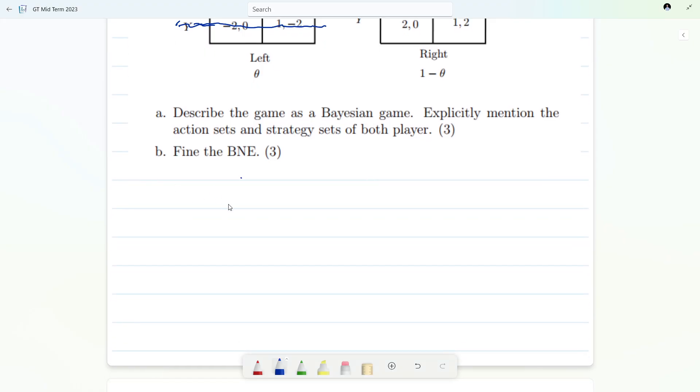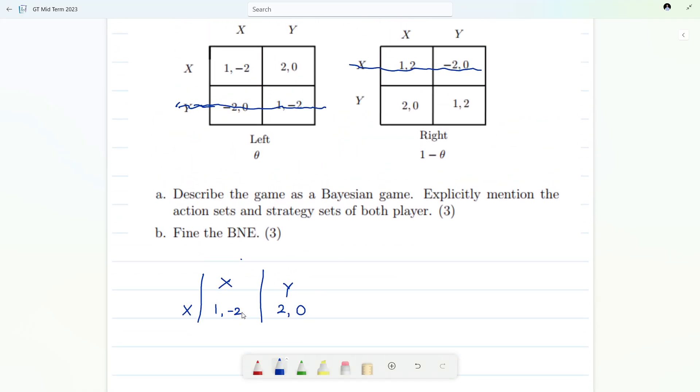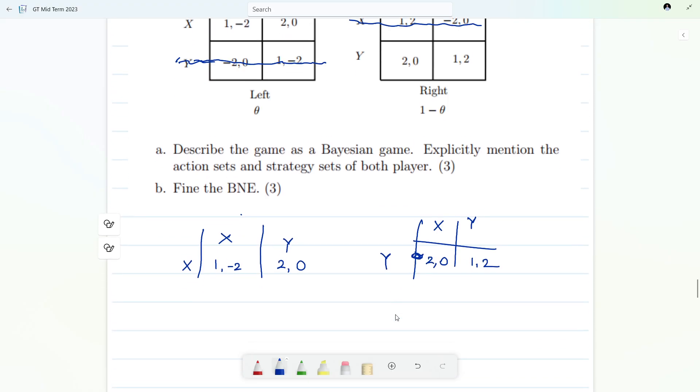This is X,Y,X when he is of left type. So the payoffs were one, minus two and two, zero - one, minus two, two, zero. And when he was of right type then the payoff was two, zero, one comma two. He is playing Y only now.